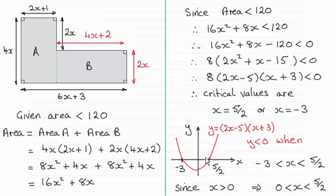All we want to know is where y is less than zero, because we want this value to be less than zero. That's where it's underneath the x-axis, which occurs for values of x between -3 and 5/2.